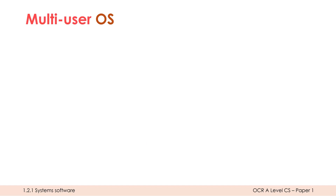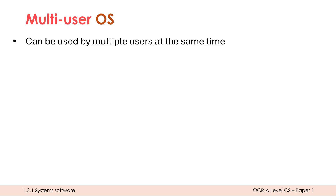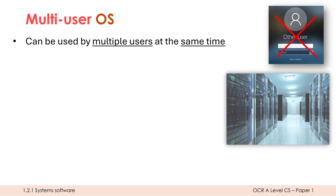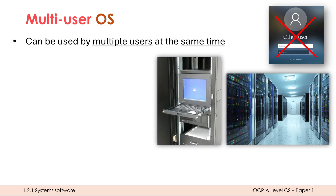The type of OS students often get wrong is the multi-user OS. Multi-user OSs can be used by multiple users at the same time — and that last part is key. Students often think this covers Windows because you can sign in with different user accounts. However, normal OSs like Windows are not multi-user because you can't sign in and use the computer simultaneously. For multi-user OSs, we're thinking about servers, where multiple terminals allow users to log on and access the server at the same time.